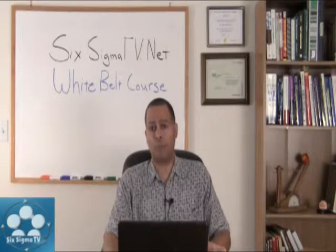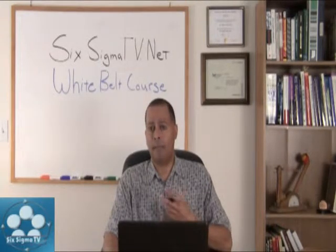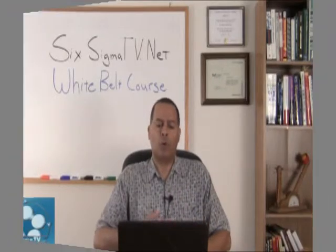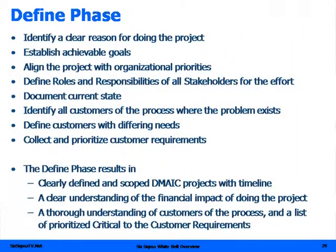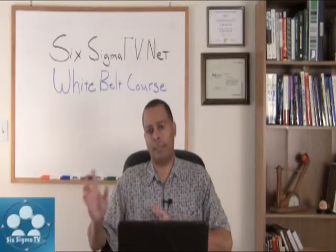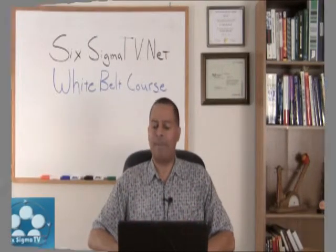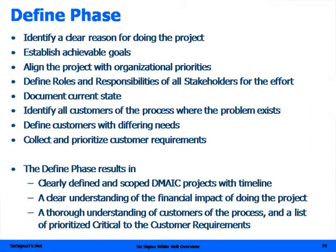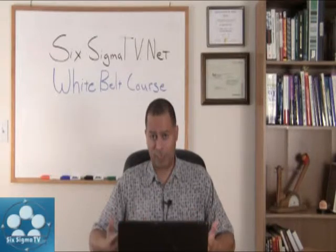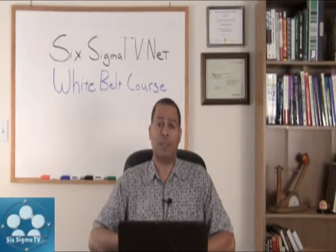You might want to look at defects using Pareto charts and do a process flow to understand what you're getting into. Clearly identify the reason for doing the project, establish achievable goals, align the project with organizational priorities, define roles and responsibilities of all stakeholders, and document your current state — what is currently happening, not what you want to happen. Identify all customers, inputs, and outputs, and where problems exist in the process. Segment customers with differing needs and understand their requirements.